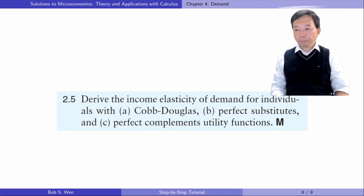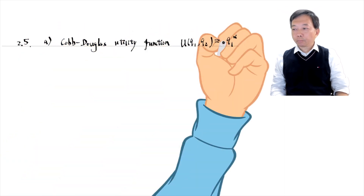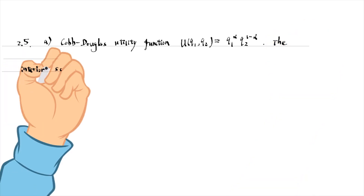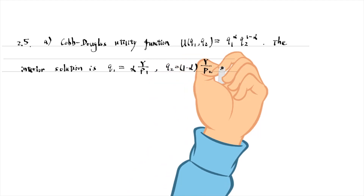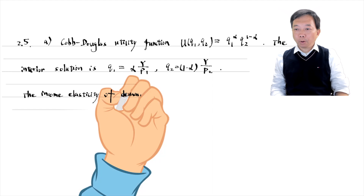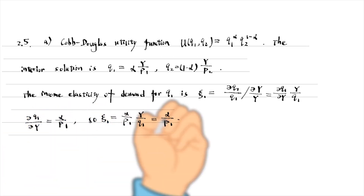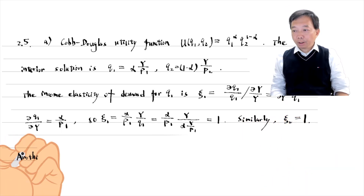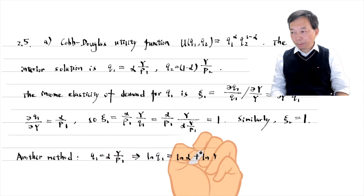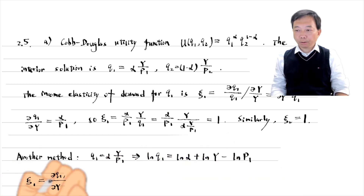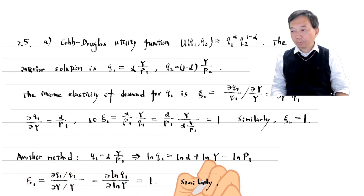Let's go to exercise 2.5. Derive the income elasticity of demand for individuals with: a) Cobb-Douglas, b) perfect substitutes, and c) perfect complement utility functions. For the Cobb-Douglas utility function, the interior solution is as follows. The income elasticity of demand for Q1 is 1. We can use another method to get the result: taking the logarithm on both sides of the equation and using the partial log expression of the elasticity gives the same answer.